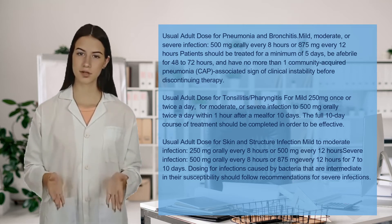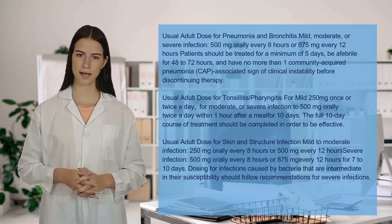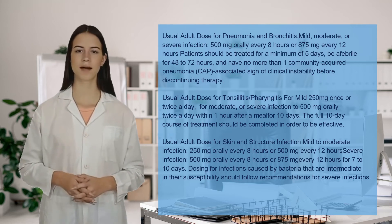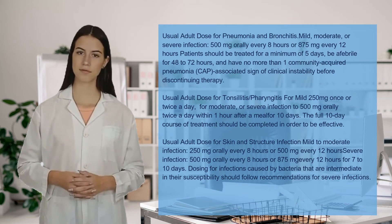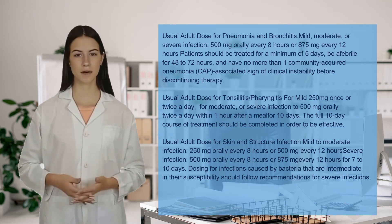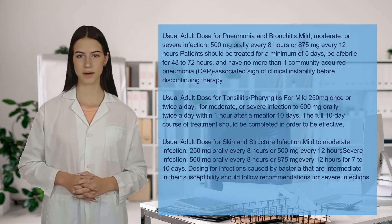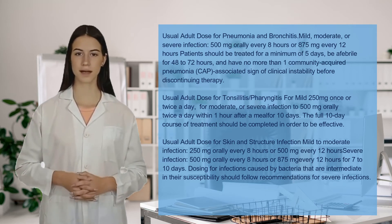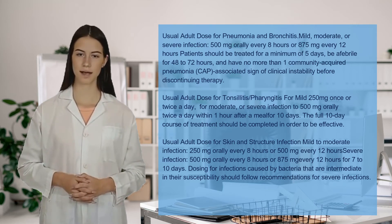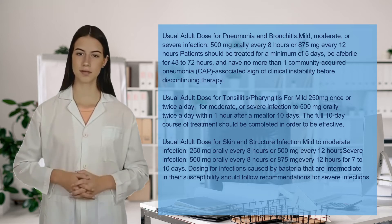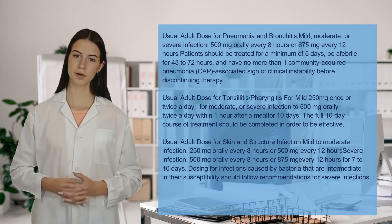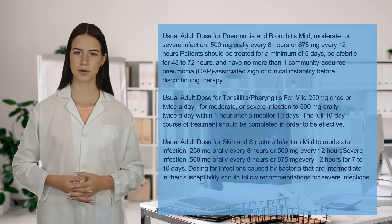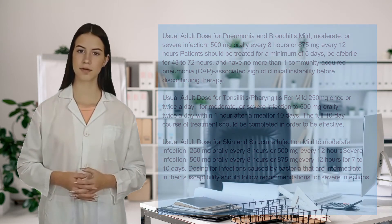The full 10-day course of treatment should be completed in order to be effective. Usual adult dose for skin and structure infection. Mild to moderate infection: 250 mg orally every 8 hours or 500 mg every 12 hours. Severe infection: 500 mg orally every 8 hours or 875 mg every 12 hours for 7 to 10 days. Dosing for infections caused by bacteria that are intermediate in their susceptibility should follow recommendations for severe infections.